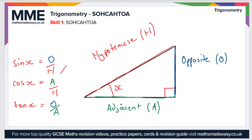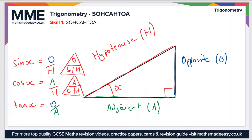Another way we can write these three functions is as triangles. Sine is opposite over hypotenuse. Cosine is adjacent over hypotenuse. And tan is opposite over adjacent. As you can see, these three functions form the acronym SOHCAHTOA, which is a useful way of remembering all three identities and what order they come in.